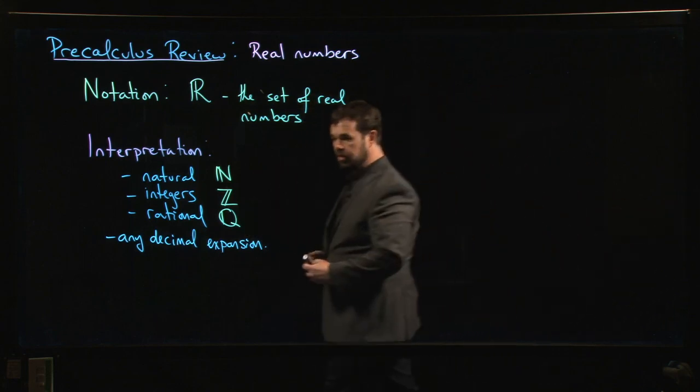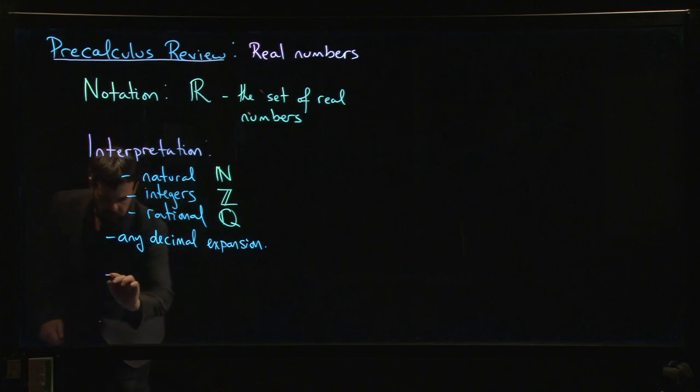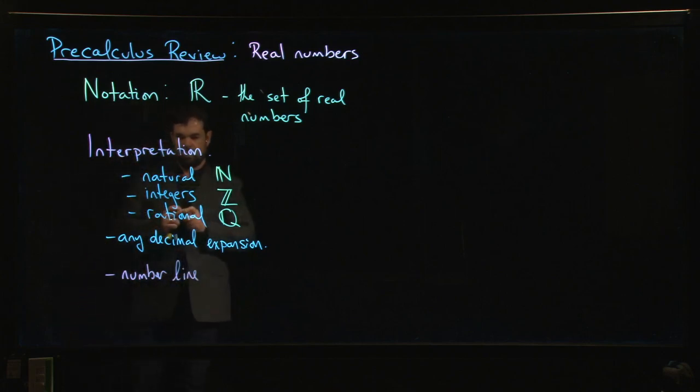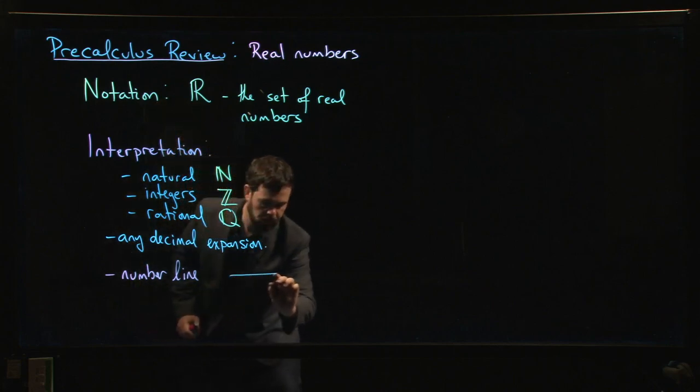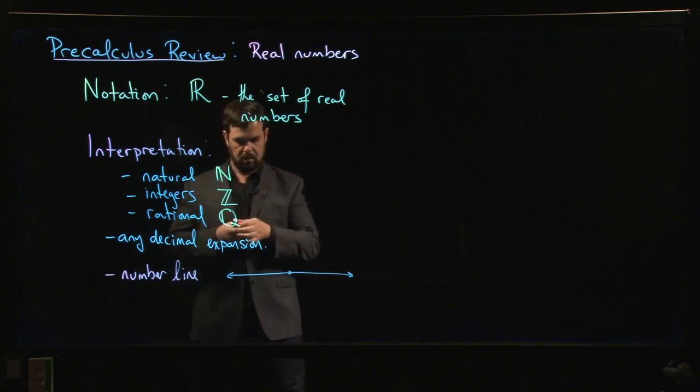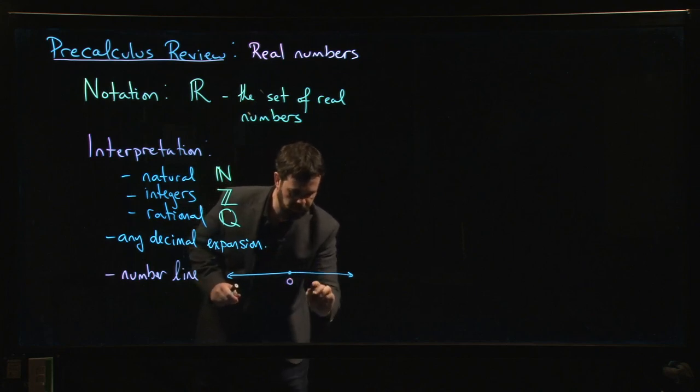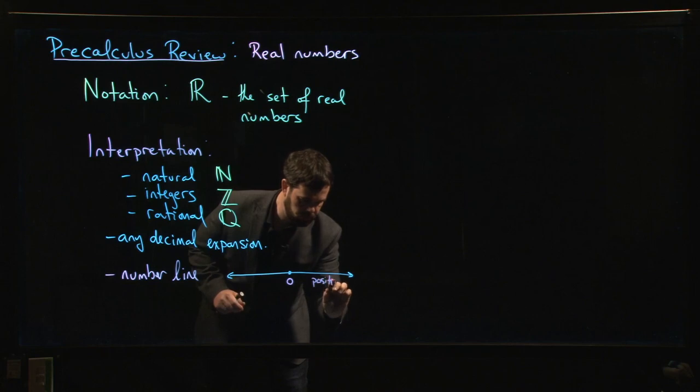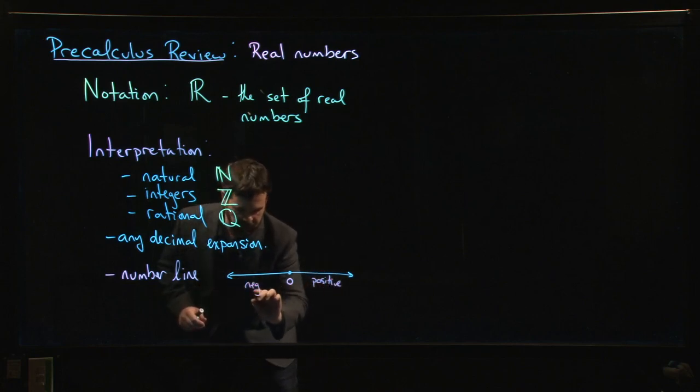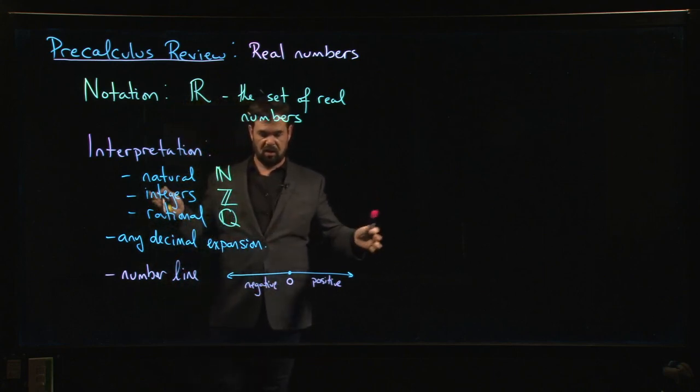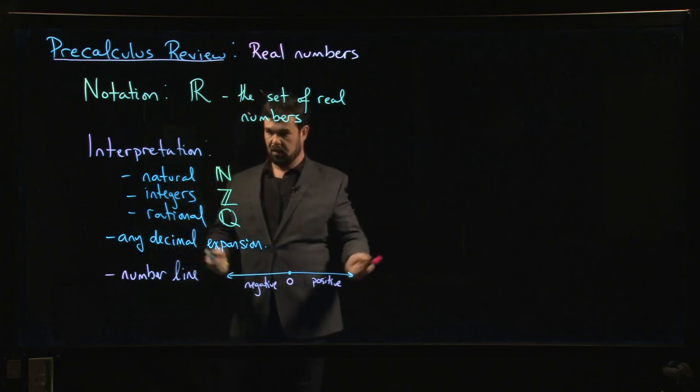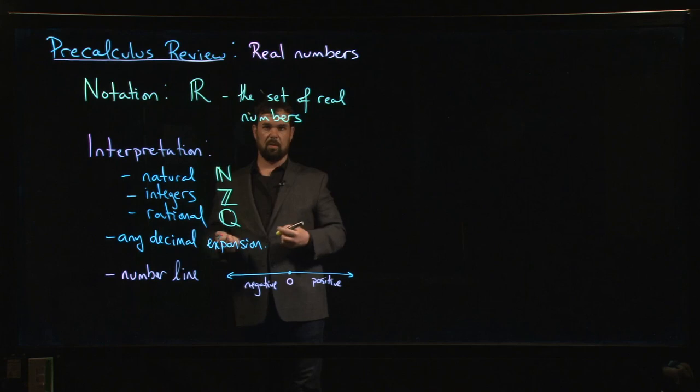Another interpretation that you've probably seen is this idea of a number line. We think of the real numbers as the set of all points on this number line that goes on forever in either direction. Somewhere in the middle is 0 with positive numbers on this side, negative numbers on this side. And we think of this as this continuous line – there's no gaps or breaks or anything in it. Every point on the line gives you a real number.